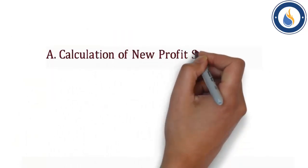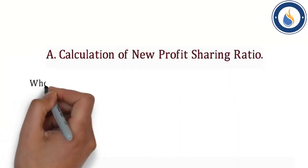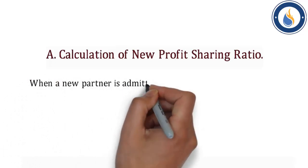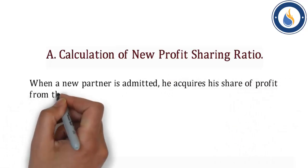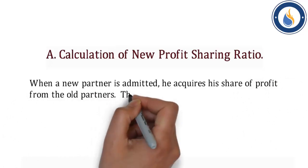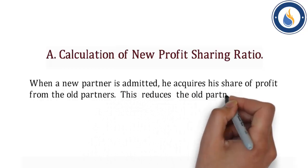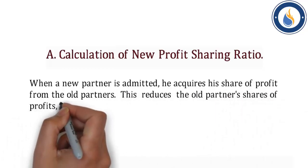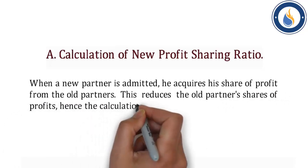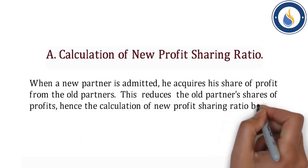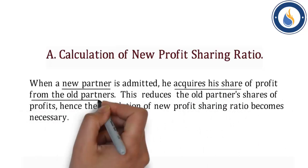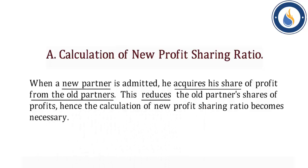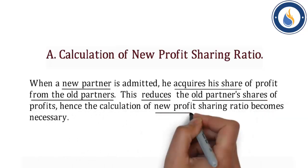Calculation of new profit sharing ratio: When a new partner is admitted, he acquires his share of profit from the old partners. This reduces the old partners' share of profits. Hence, the calculation of new profit sharing ratio becomes necessary. जब new partner का admission होता है, तो वो अपना profit का share old partner से acquire करता है, इससे old partner का share reduce हो जाता है, इसलिए new profit sharing ratio calculate किया जाता है।